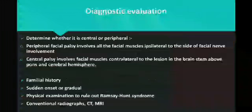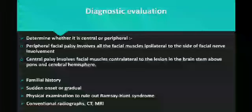Diagnostic evaluation: first determine whether it is central or peripheral. Peripheral facial palsy involves facial muscles ipsilateral to the side of the facial nerve involvement, while central palsy involves muscles contralateral to the lesion. Family history is important as Bell's palsy accounts for 4 to 14 percent of genetic causes. Sudden onset and gradual progression may be seen. Physical examination should rule out Ramsay Hunt syndrome, which shows vesicular rashes in the ear region. CT scan and MRI are reliable for diagnostic evaluation.